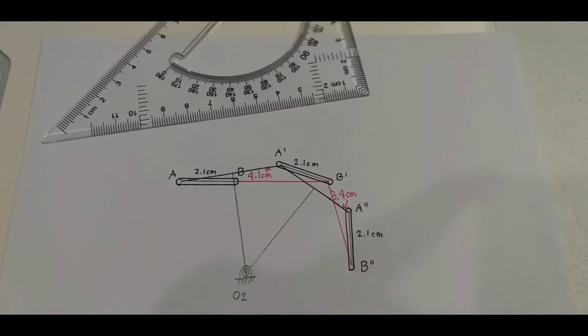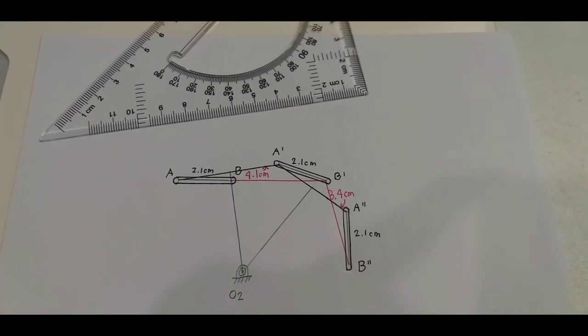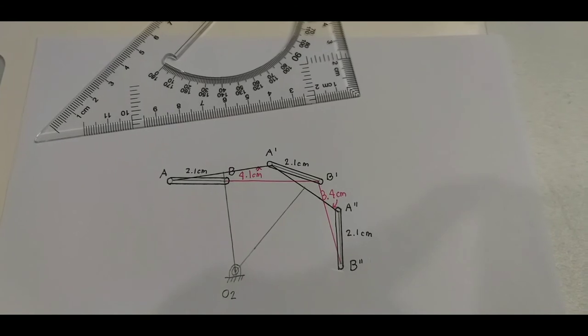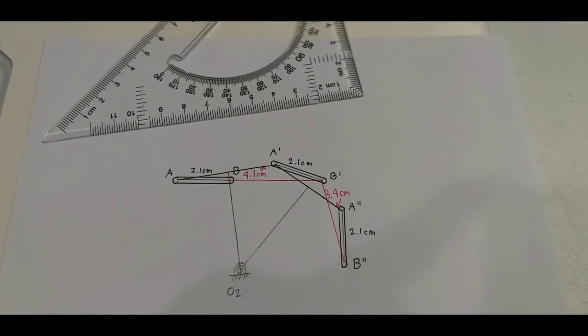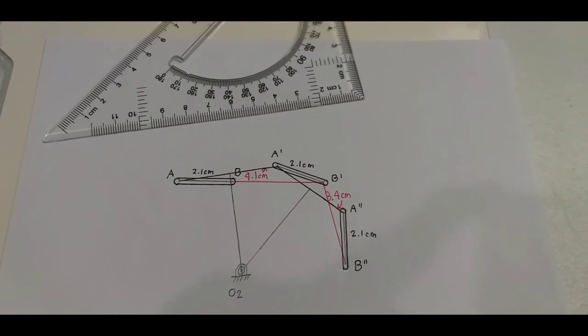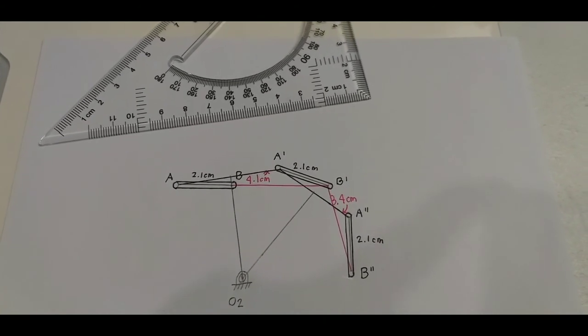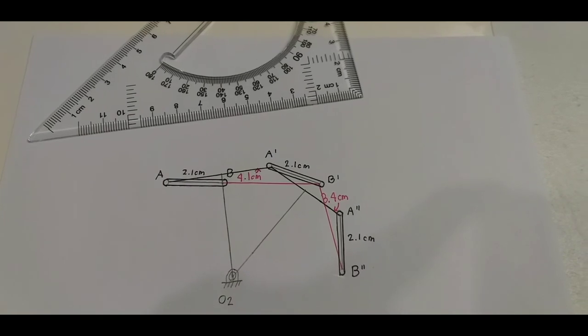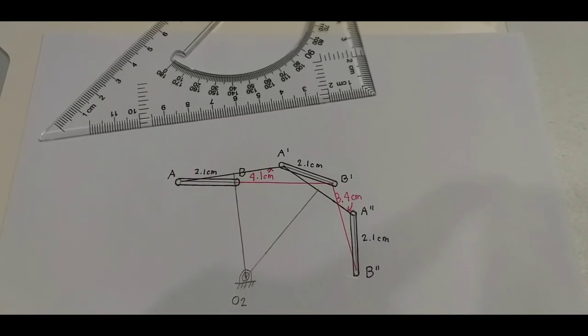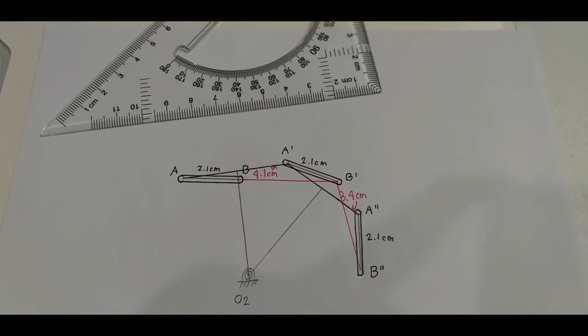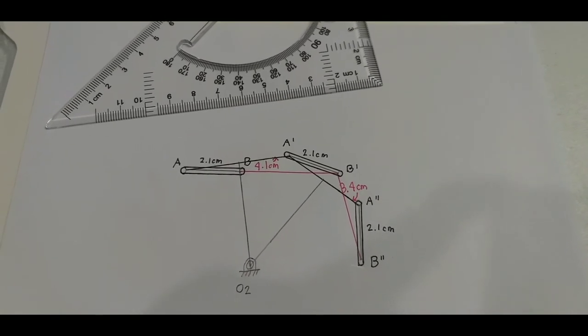Let's now measure the two lines that we've drawn in red with our ruler in centimeters and now calculate the bisector of these two lines. We'll do the same thing and extend their perpendicular bisector and find their intersection to find fixed hinge O4.